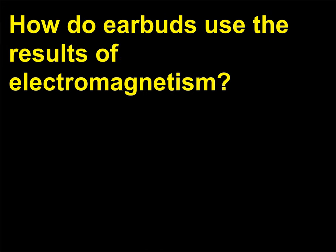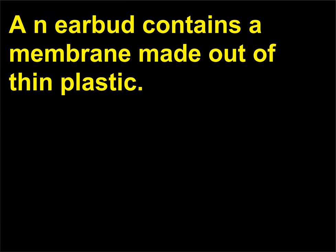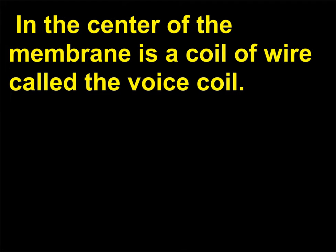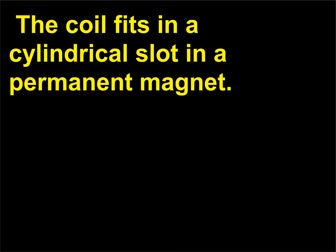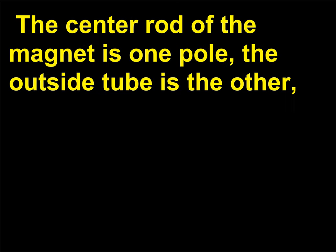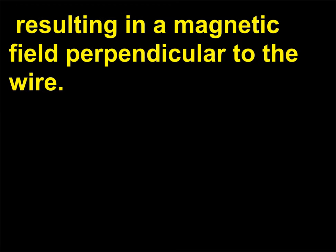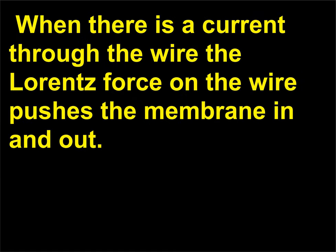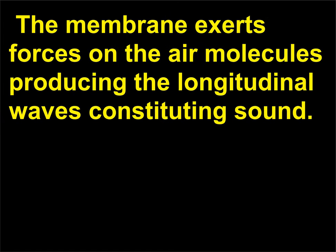How do earbuds use the results of electromagnetism? An earbud contains a membrane made out of thin plastic. In the center of the membrane is a coil of wire called the voice coil. The coil fits in a cylindrical slot in a permanent magnet. The center rod of the magnet is one pole, the outside tube is the other, resulting in a magnetic field perpendicular to the wire. When there is a current through the wire, the Lorentz force on the wire pushes the membrane in and out. The membrane exerts forces on the air molecules, producing the longitudinal waves constituting sound. Refer to the sound chapter for more information.